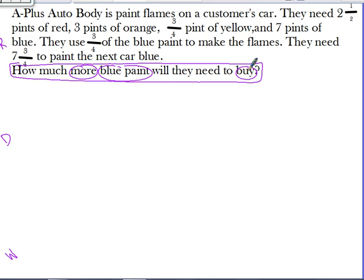If they're only looking at blue paint, I don't really need to know how much of the other paints they need. That's extra information to confuse me, but I'm not going to use it to solve. So I can just get rid of some of those numbers. I don't need to know how much red paint there is, or how much orange or yellow.